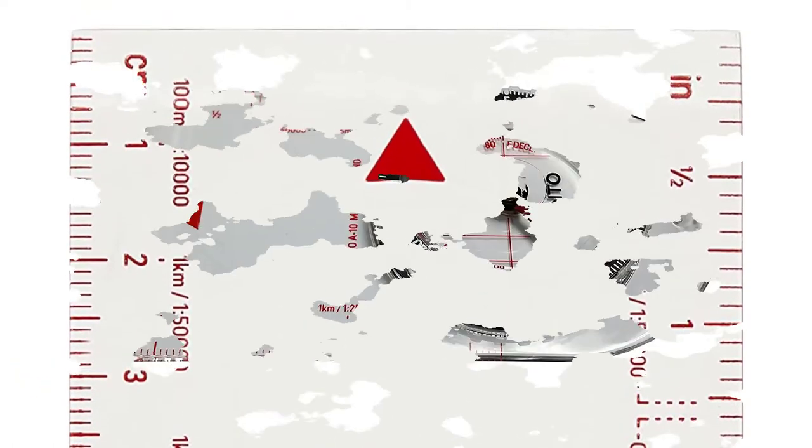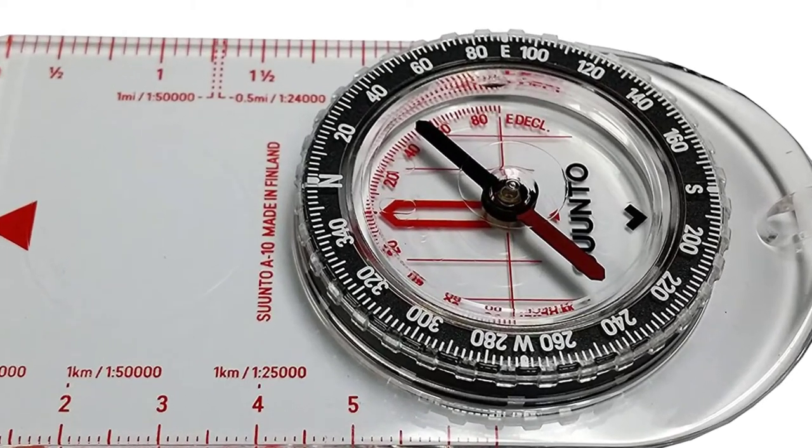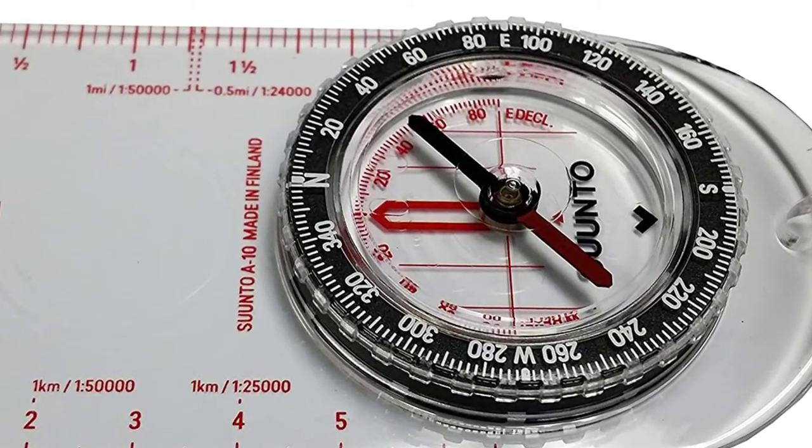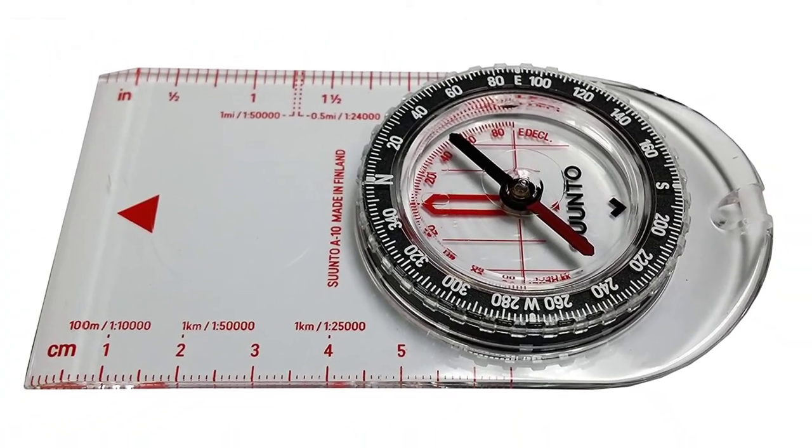I like the quick-detach snaplock lanyard the Suunto A10 comes with. When you're on the move, keep the compass attached to you with the lanyard. When it's time to deploy your compass, quickly detach the snaplock lanyard from the compass.